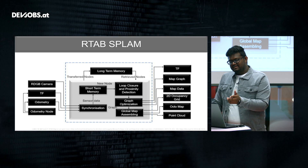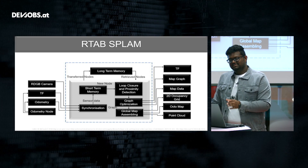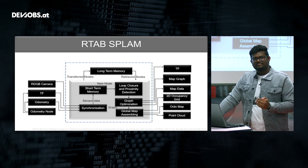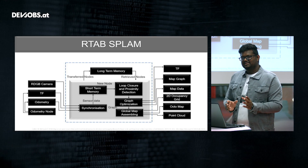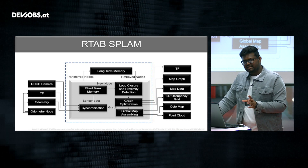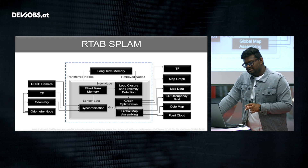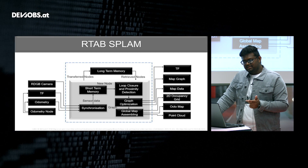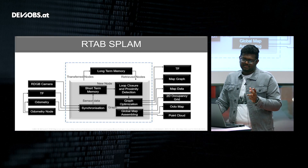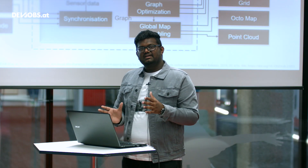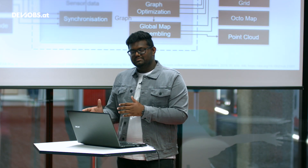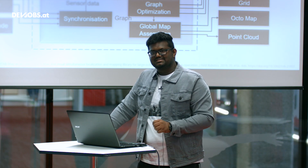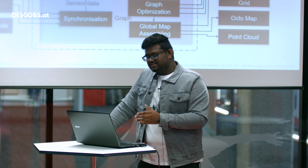In this approach, RTAB stands for Real-Time Appearance-Based sequential planning, localization, and mapping. It is the next level of SLAM where we handle localization and mapping simultaneously. As you can see in the diagram, the inputs are an RGBD depth camera along with TF transforms and odometry data from the drives or drive controllers. These data are synchronized with timestamps and sent to the short-term memory, which is the working memory the robot uses — like RAM in a PC.